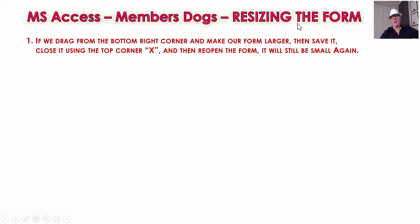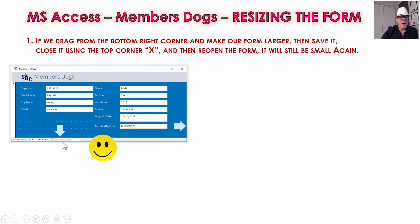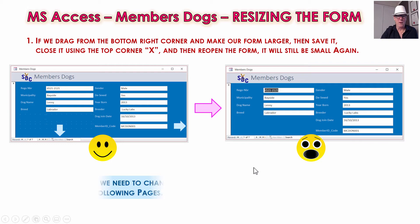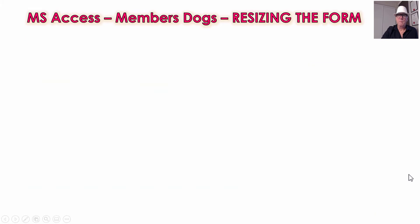Now let's drag the corner and make the form larger — we can get those double arrows and resize it, stretching it down and across to make more open space, which always looks better on screen. But here's the problem: if we close it, save it, and reopen it, Access has just shrunk it down again to the size Access likes. So we need to do some work to fix it so that we can stretch things as we like and when we save them they stay that way — Access doesn't get its own evil way and make them small again.